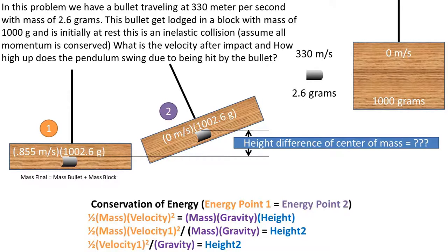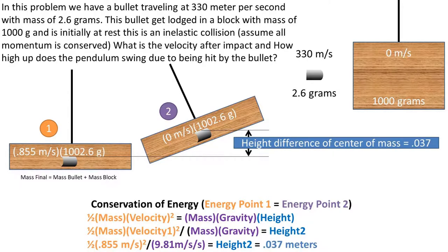Simplifying the equation, we get that one-half the velocity one squared, divided by the acceleration due to gravity, is equal to the height at point 2. Plugging in our numbers, we get a height at point 2 of 0.037 meters. Take a minute to appreciate the unit cancellation.